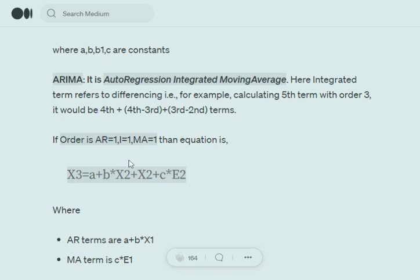Similarly, if the order is 1, then we would be adding up A into B star X2 plus X2 plus C into E2. So where B star into X2 is the autoregression part, X2 is the integrated part and C into E2 is the moving average part.